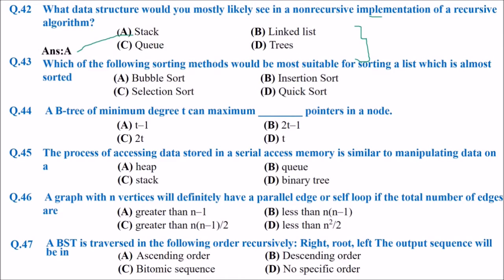Which sorting method would be most suitable for sorting a list that is almost sorted? You already have a nearly sorted list. The best choice would be bubble sort, because it performs efficiently when the list is almost sorted.